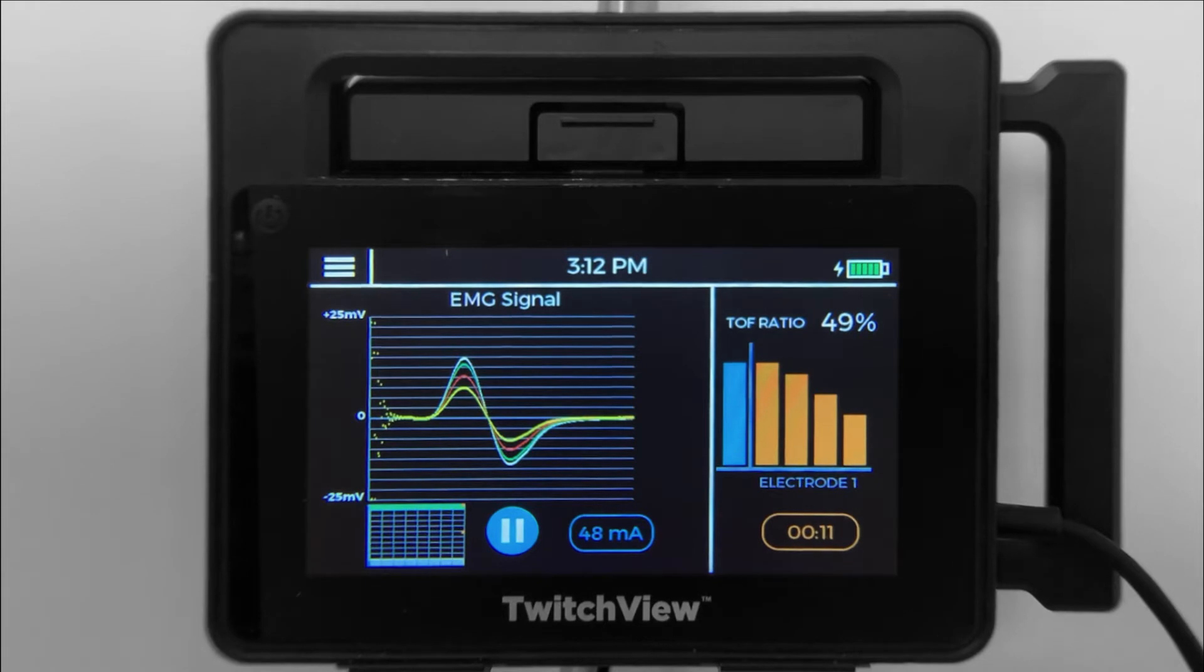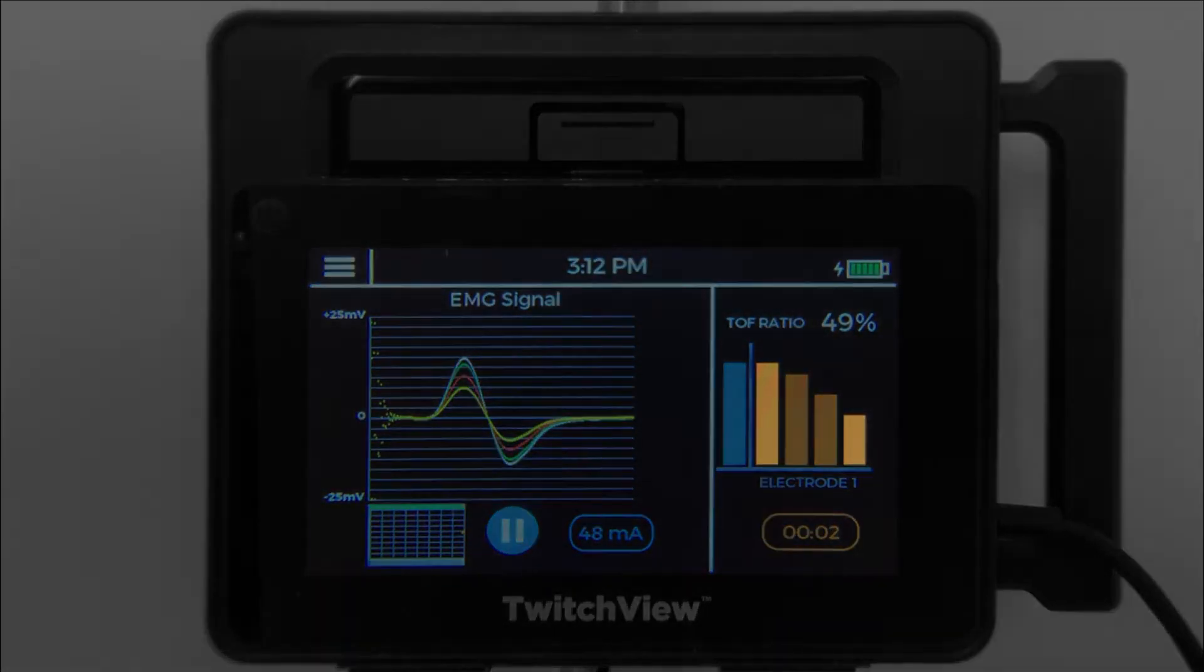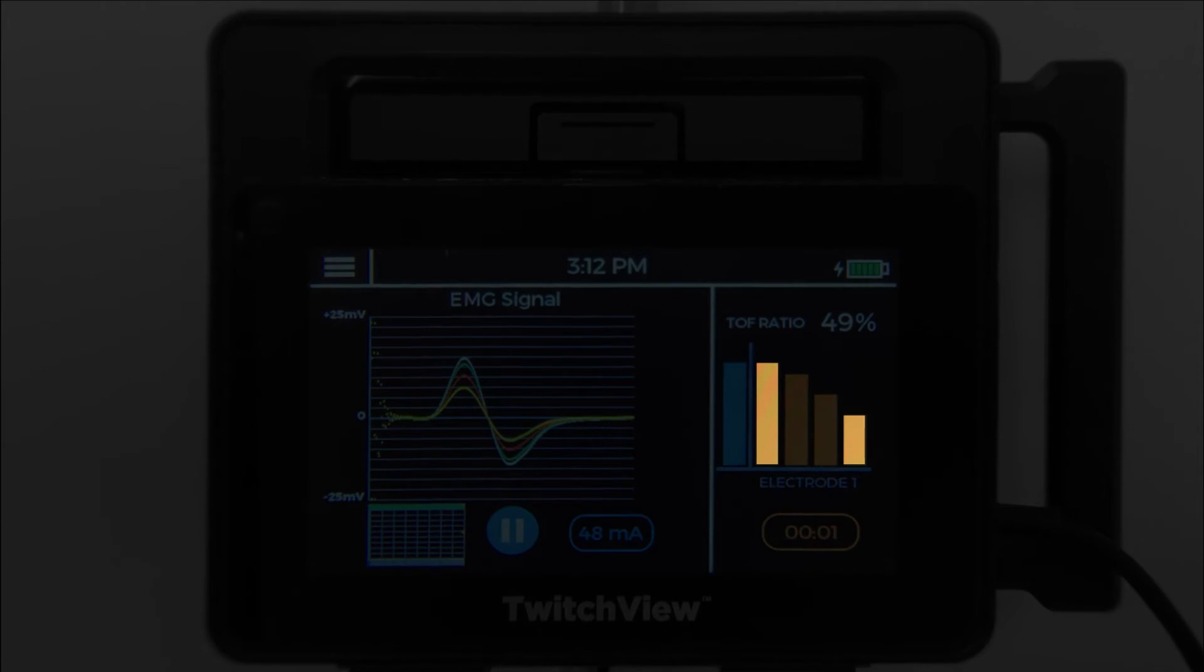After paralytic is administered, you will see pharmacodynamics in action. When four twitches are present, the monitor will measure the TRAIN-4 ratio or the ratio of T4 to T1.